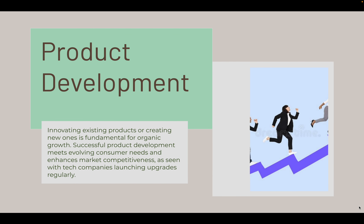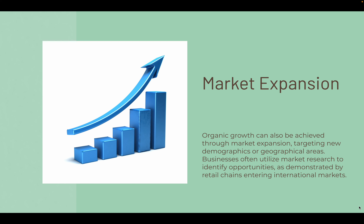Now let's look at methods of growing organically. Number one is product development — innovating existing products or creating new ones is fundamental for organic growth. Successful product development meets evolving consumer needs and enhances market competitiveness. This can be seen with tech companies that launch upgrades regularly, keeping up with technological advancement and consumer involvement to stay competitive.